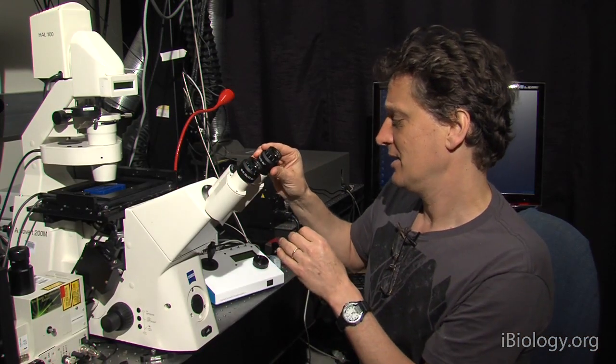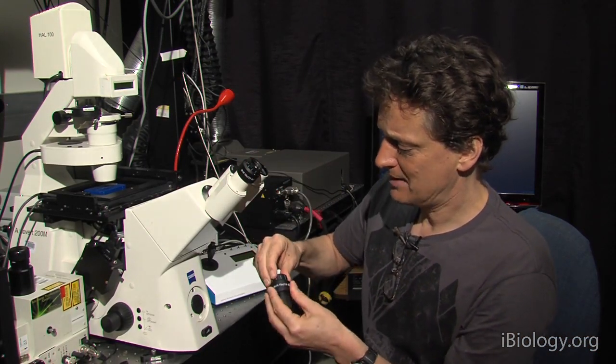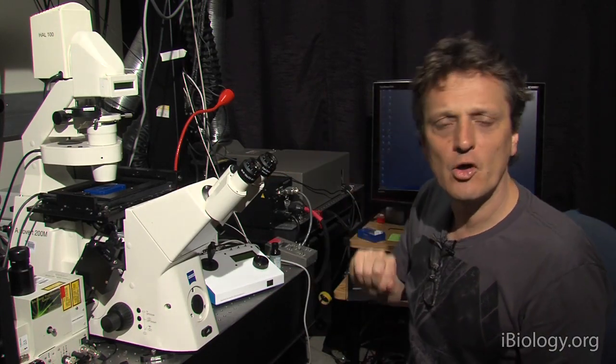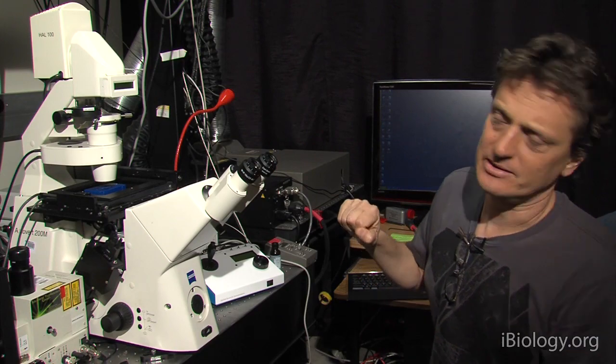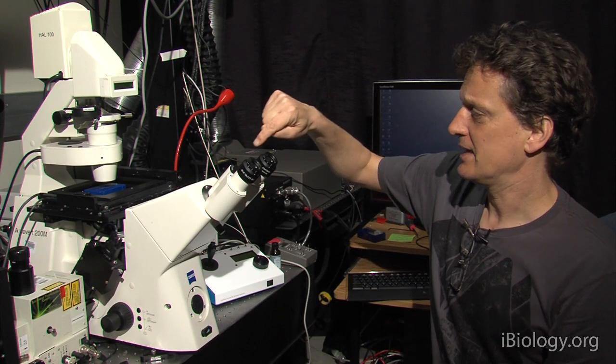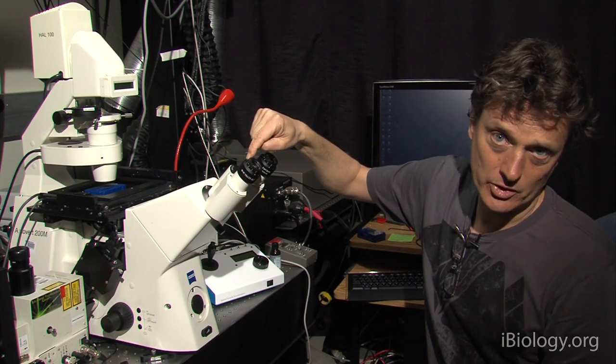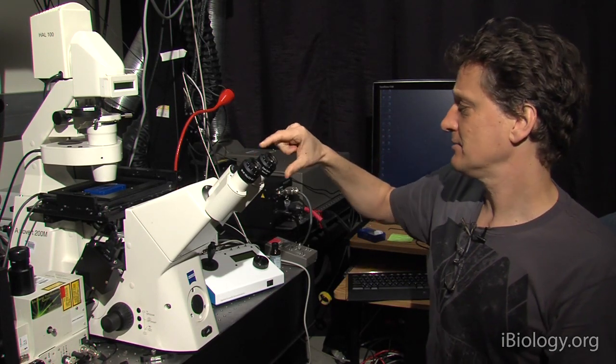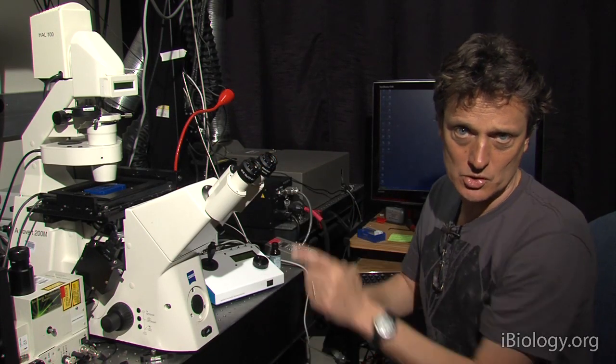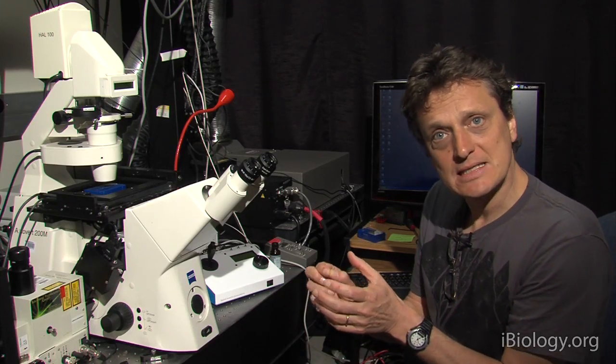Now, another issue with the eyepieces is that you will often encounter that the image on your camera is not in the same focal plane as the image that you see through your eyepieces. And that is because the camera is focused to slightly a different plane than the image you observe through the eyepieces. In the ideal world, we would have a focusing C-mount.